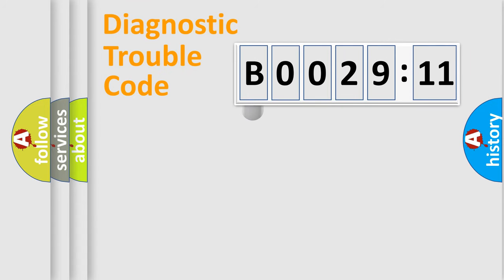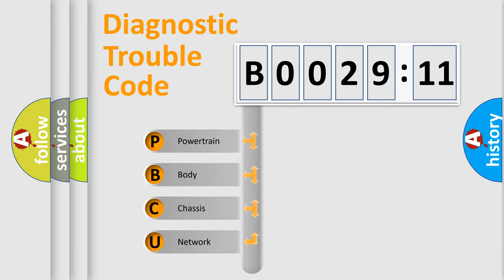First, let's look at the history of diagnostic fault code composition according to the OBD2 protocol, which is unified for all automakers since 2000. We divide the electric system of an automobile into four basic units.